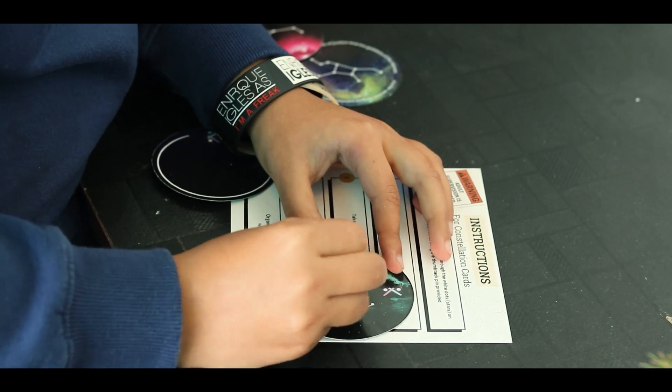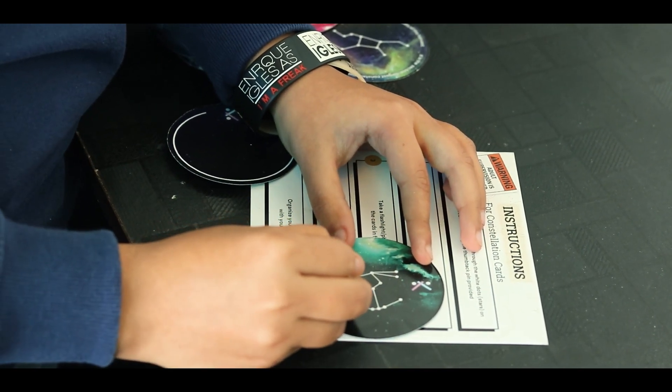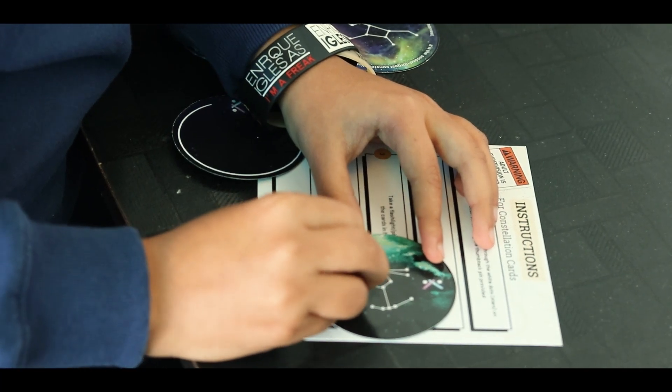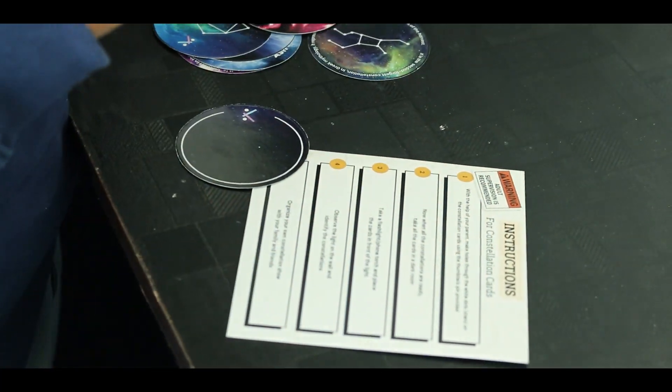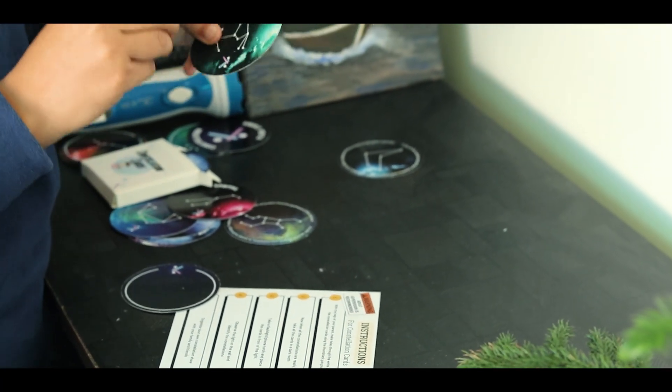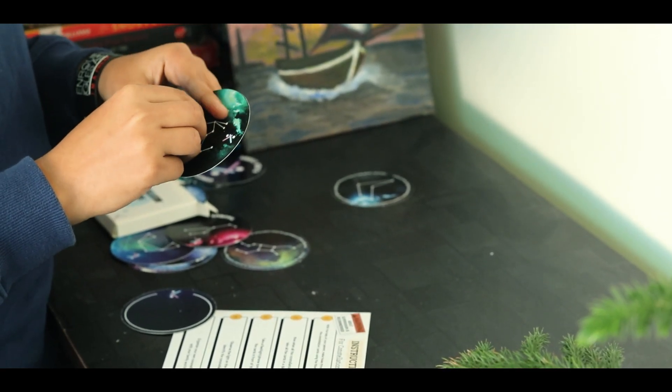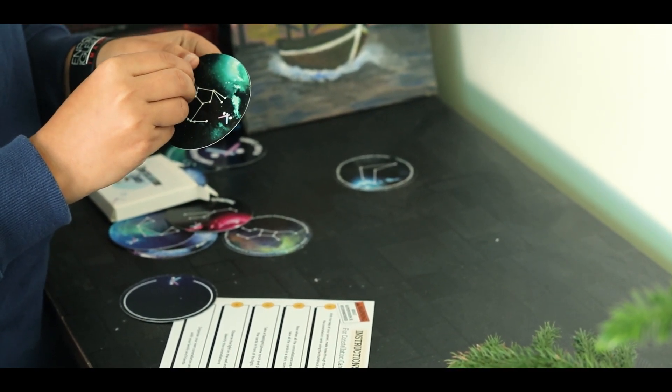So just like that, one by one, you have to keep on making dots and you have to make sure that the pin also passes through. So you can also make them like this. So we have to make these dots one by one and we are currently doing it for the constellation of Orion.